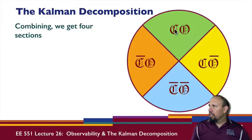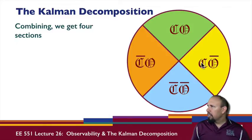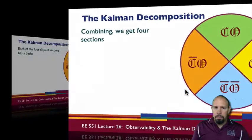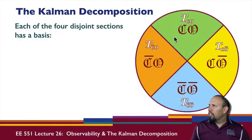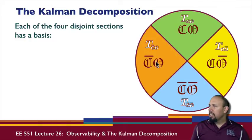This subspace is both controllable and observable. This subspace is not controllable but is observable. This subspace is controllable but not observable. This subspace is neither controllable nor observable. Each of these four sections has a basis — T_cO is the basis for the controllable and observable subspace, T_c̄O is the basis for the uncontrollable and observable subspace, and so on.